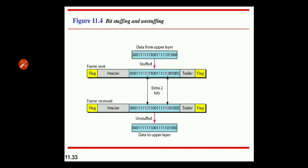Note that extra bit is added after one zero follows by five ones, regardless of the value of the next bit, to guarantee that the flag field sequence does not appear in the frame.